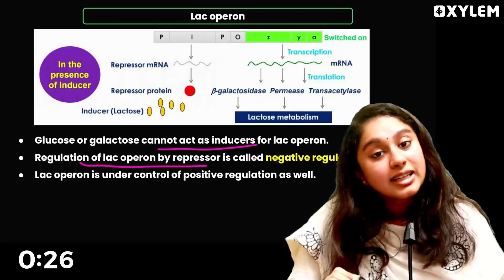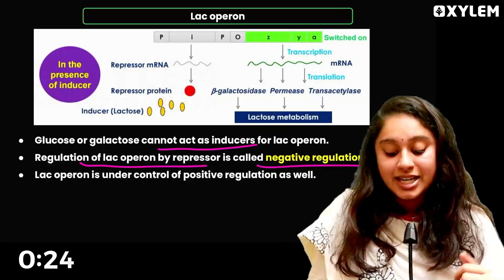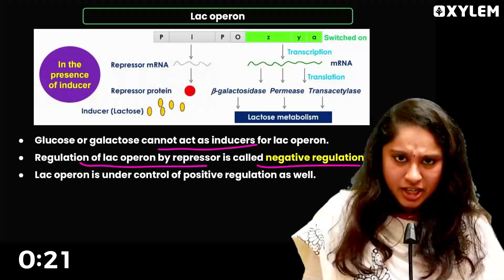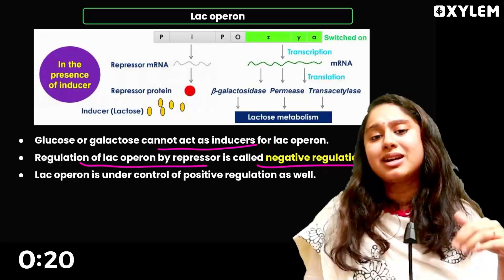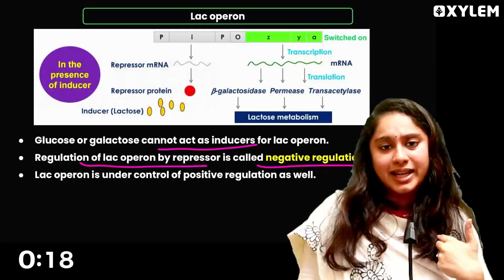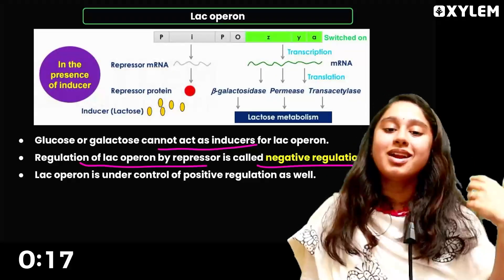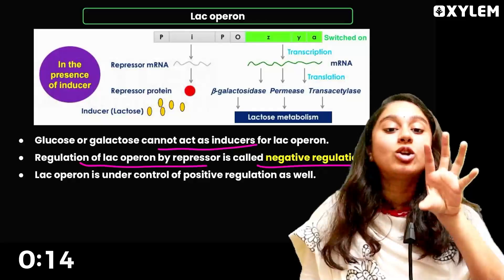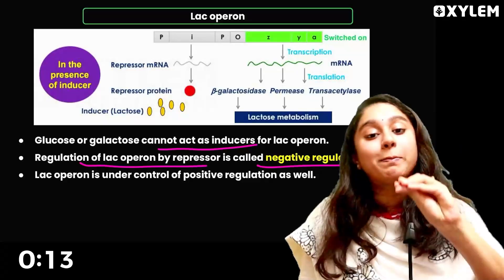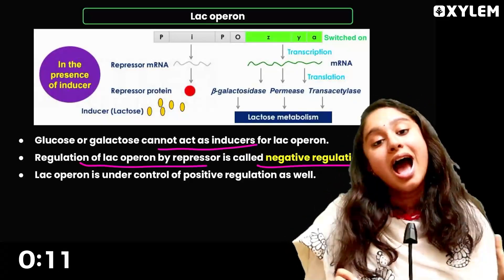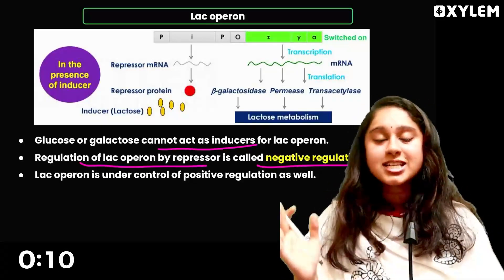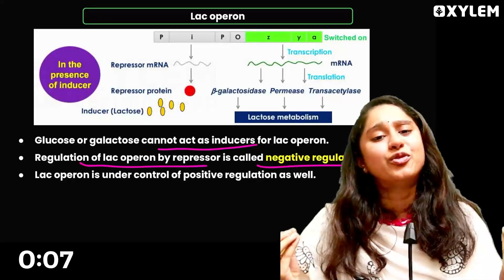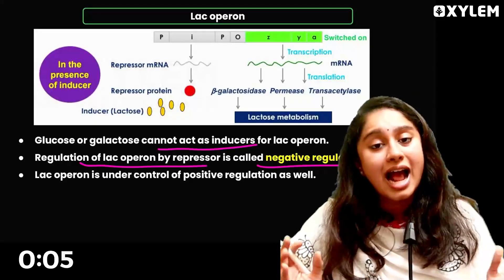This can be called negative regulation and positive regulation. When the repressor is switched on and blocks transcription — that is negative regulation. When lactose is present and induces transcription — that is positive regulation.